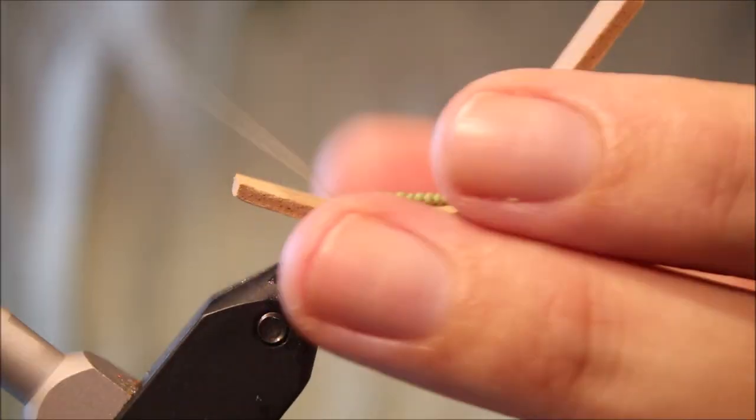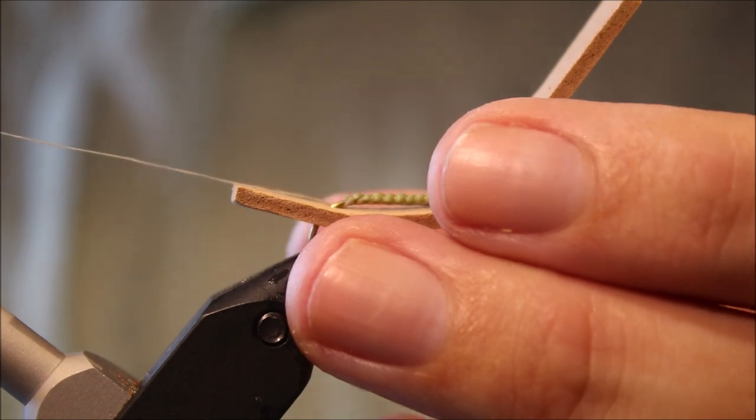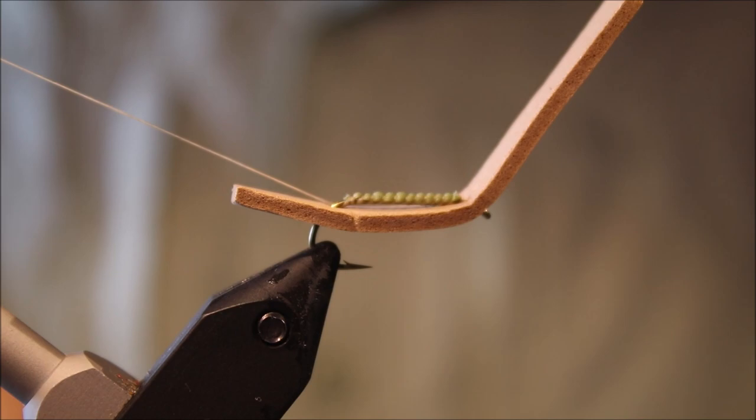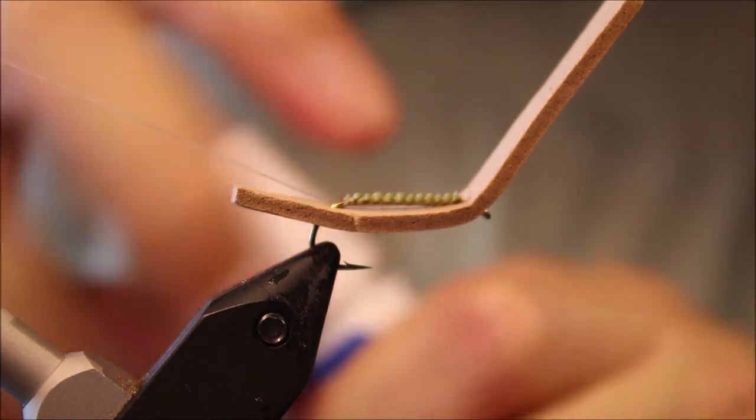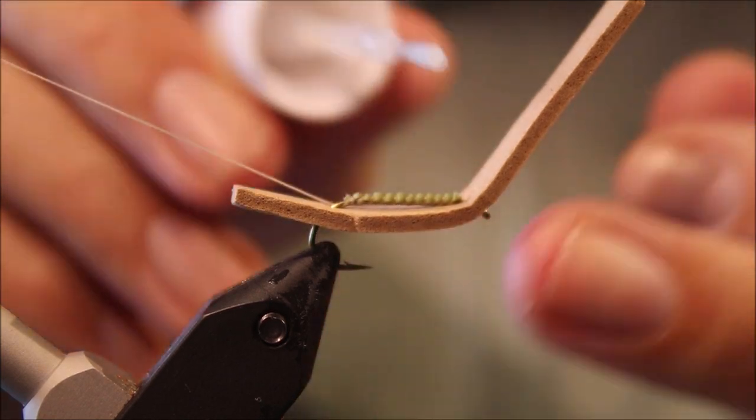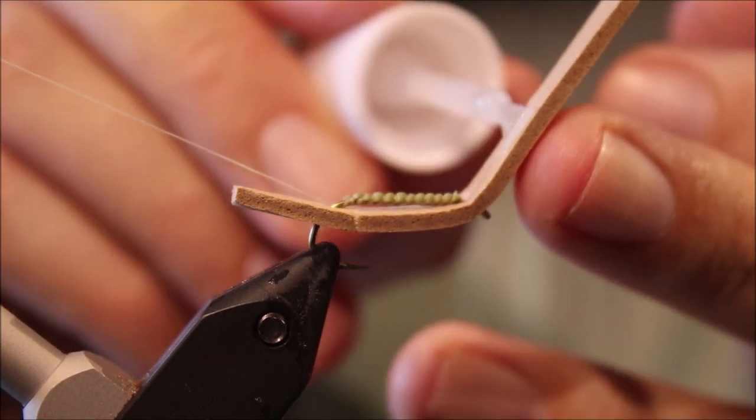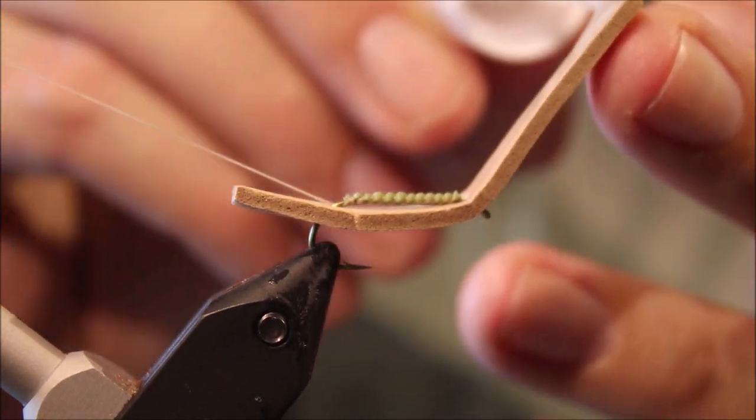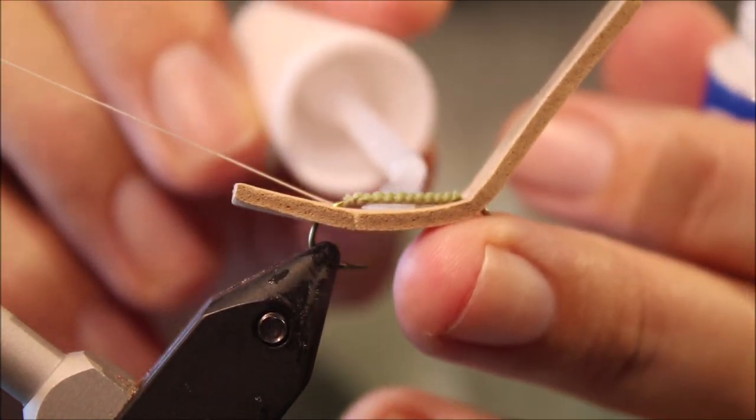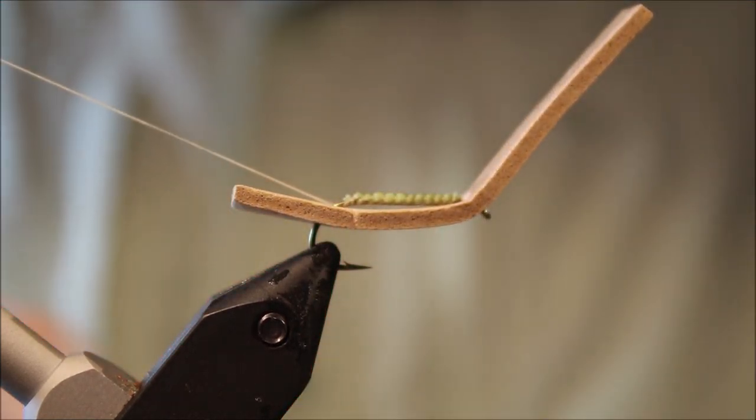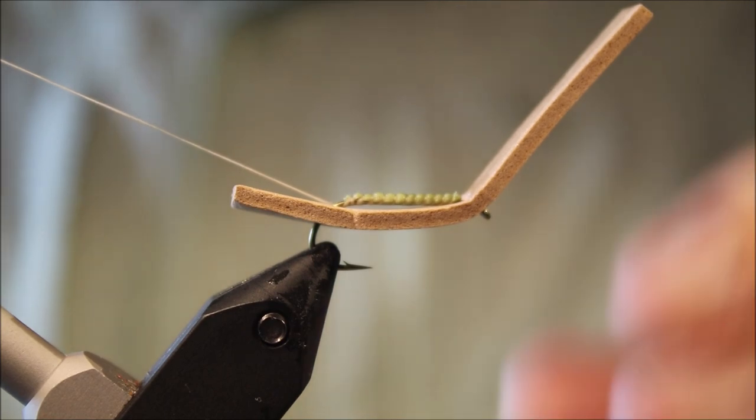So what I do to take the tension off the foam, I just sort of hang my bobbin on my vice. And then I'll paint a bit of glue with the brush on the entire upper side and I'll get a bit under the foam and all that here. Very light, you don't need a lot.